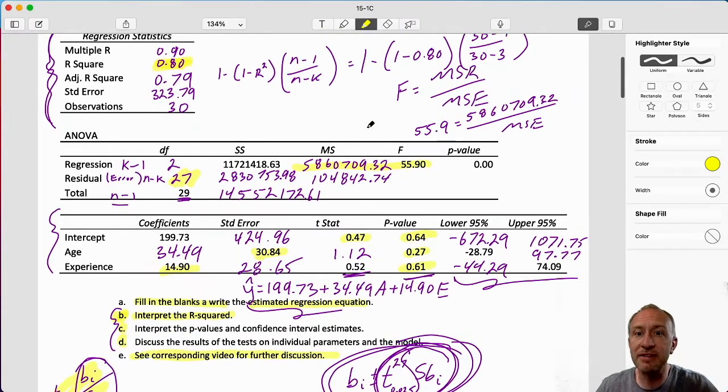Moving on, C and D interpret the p values and the intervals and D discuss the results of the tests, individual tests. Those two C and D are very much related, so let's do those together.